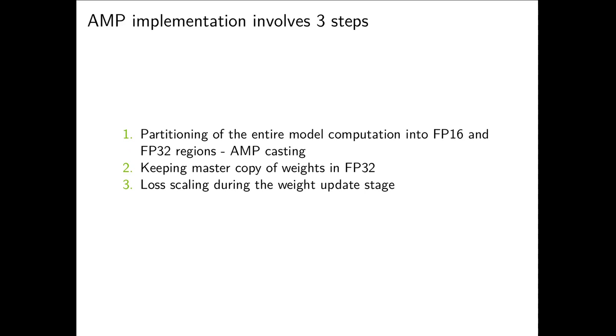AMP implementation typically involves three steps. The first is we need to partition the entire computation into half and full precision regions. We do it with AMP casting. The second step is we need to keep master copy of weights in FP32. And the last one, we need to do loss scaling.